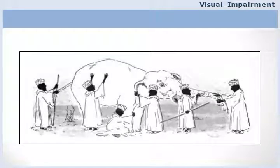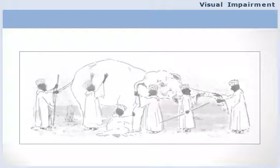I'll begin with a story you may have heard before. There were some blind people asked to describe an elephant. One blind person who touched the tail described the elephant as a rope. Another who touched the leg thought it was a trunk of a tree, while another who touched the ear thought it was a fan. Blind people describe the world around them based on what they feel with their fingers, so it becomes important for us to bring the world to their hands.